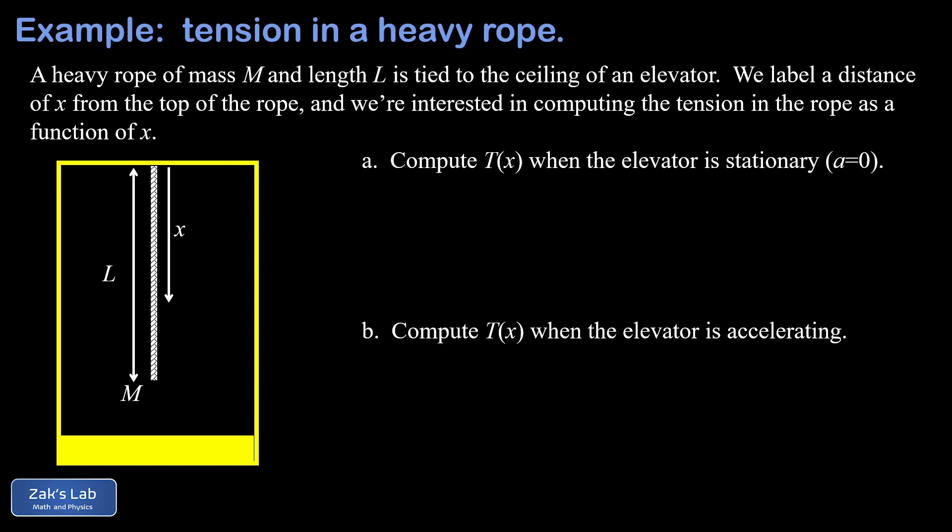First we find the tension when the elevator is stationary. Then in part b we turn on an upward acceleration with magnitude a and we find the tension in that case.